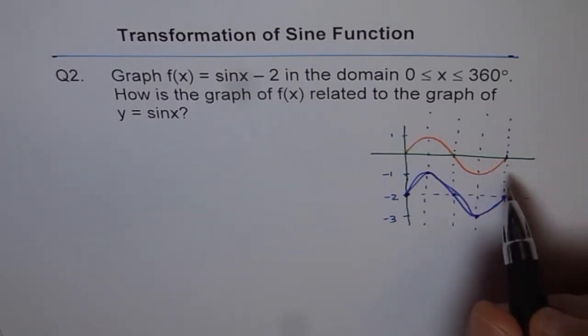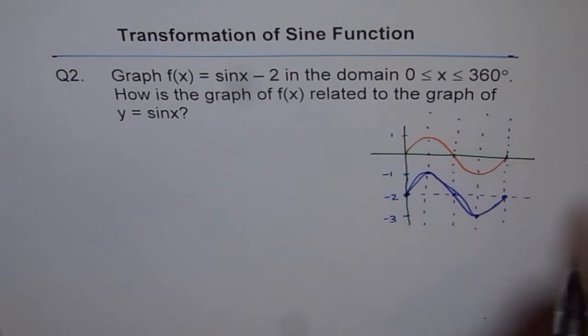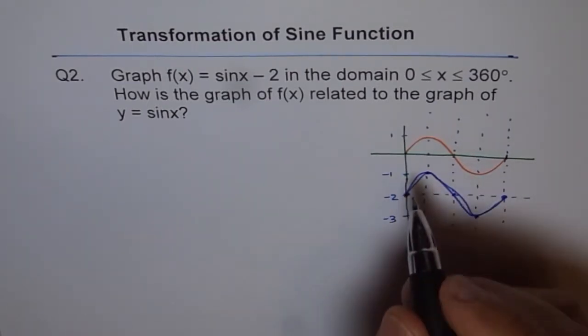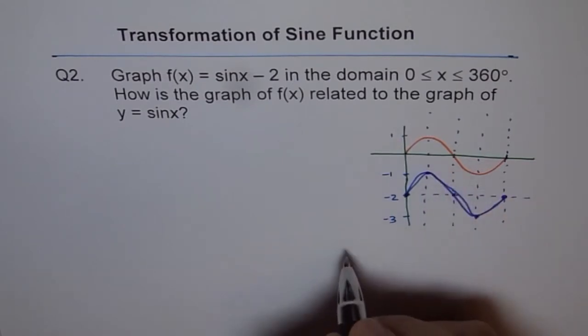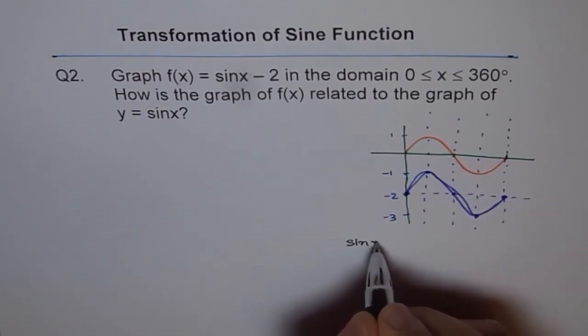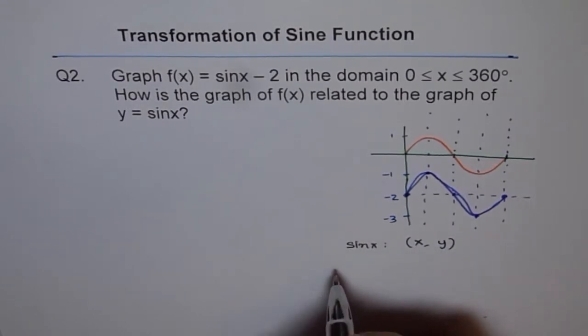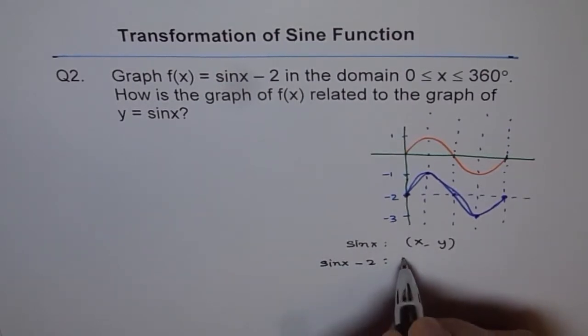Now, how are these graphs related? So what we can do is, let's say for sin(x), the coordinate points are (x, y). Then in case of sin(x) - 2, these coordinate points will get transformed. The x remains same.